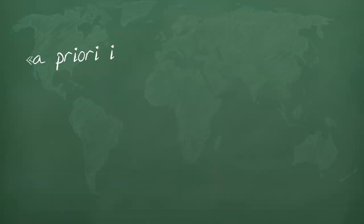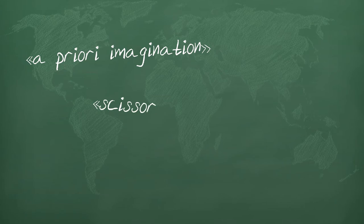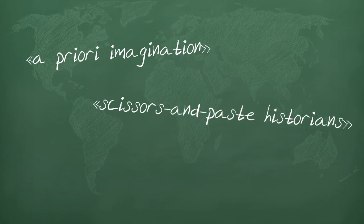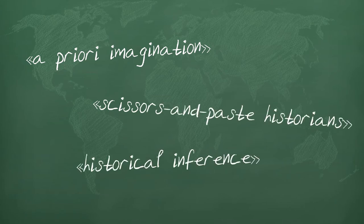Collingwood goes on to discuss a number of other interesting topics, like what he calls a priori imagination, scissors and paste historians, and historical inference. But I'll leave that for you to delve into on your own.